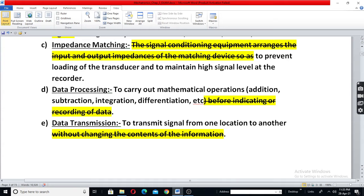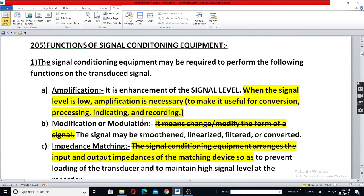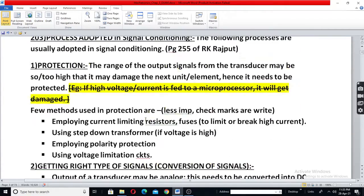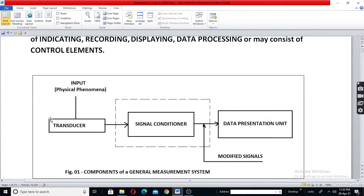Next, data transmission from one location to another location also you have to do that. Suppose the transducer is in the furnace and measurement unit is in the control room. So from there to here it may be 10-20 meters or sometimes even one furlong also. In such case, you need to transmit the signal from here to there.